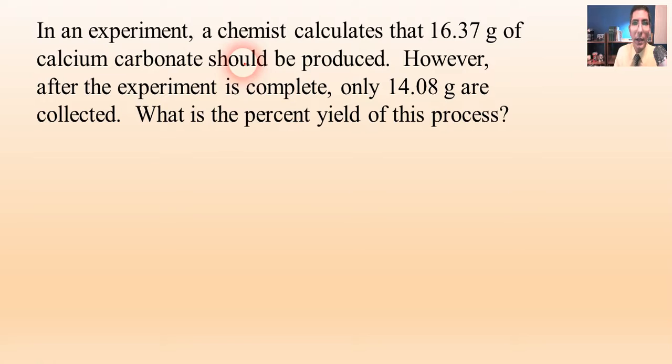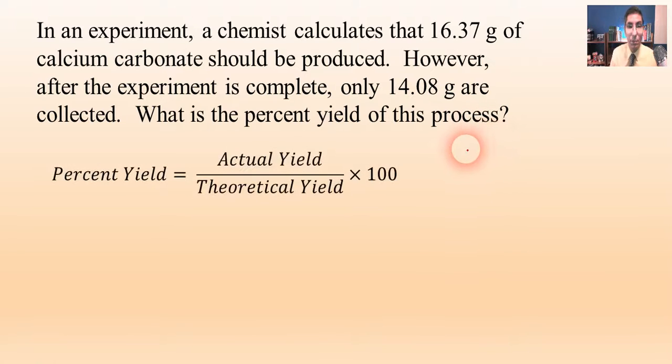In an experiment, a chemist calculates that 16.37 grams of calcium carbonate should be produced. However, after the experiment is complete, only 14.08 grams are collected. So what's the percent yield in this process? Once again, it's a fairly simple calculation. Percent yield is just actual divided by theoretical times 100.